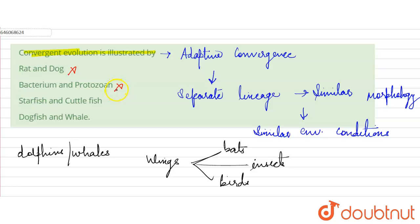Starfish and cuttlefish have different body organization due to different body symmetry. Because they have different body symmetry, obviously they will show different body organization. The next is dogfish and whales.